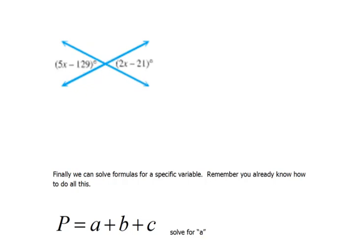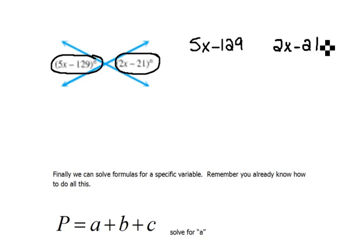Now, how can we use that to set up an equation and solve it? If we know that our first angle is 5x minus 129, and we know that our vertical angle to that is 2x minus 21, well, our definition said that vertical angles are the exact same measure. If these are the exact same, then that means they are equal to each other. So there is our equation.